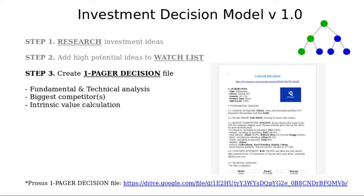Next, while the asset is on the watchlist, I start creating a one-pager decision file, basically doing fundamental and technical analysis, find the biggest competitors, have an intrinsic value calculation. You can see in the description of the video, and also at the URL posted here, I put a one-pager decision file for Prosus.